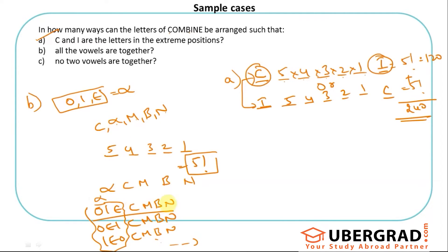So alpha C M B N is only counted as one thing in this five factorial, but actually I can have many more because these letters within alpha can also arrange themselves. So what should I do? Within alpha there are three letters. So it's like again I have three blanks: O I E. So I have O I E here. So three options, then I will be having two options and one option, that is three factorial. So it is five factorial into three factorial, the answer for this.